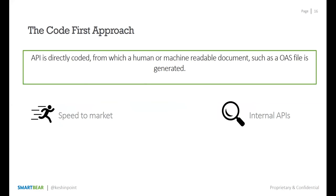Those are the questions we want to address in today's demo. A quick overview of the code-first approach: your API is directly implemented, and from that implementation the OpenAPI file is generated. The advantages are that it's faster to get the API to market, and it's perfect for internal APIs where there aren't many consumers and they can understand the API without a full design process.